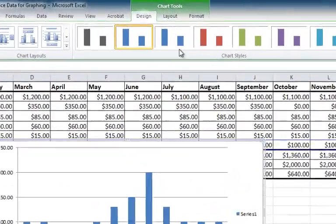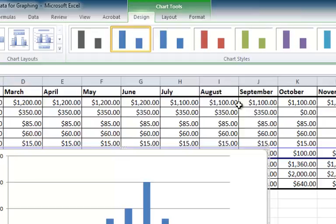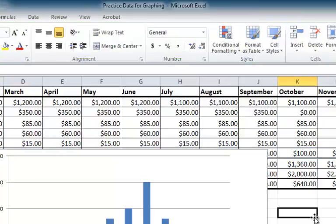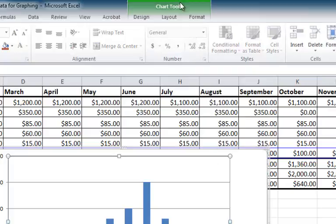You'll notice when the graph is highlighted, there are several tabs at the top. These are the Chart Tools tabs. If I click on the spreadsheet, they disappear, but when I highlight the graph again, they come back.